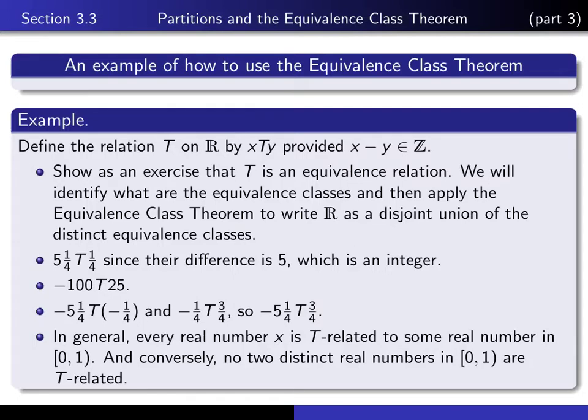So in fact, I claim that, in general, every single real number x is T-related to some real number between 0 and 1. And conversely, no two distinct real numbers in [0,1) are T-related. Now, let's do some calculations to see if we can convince ourselves that that's true.